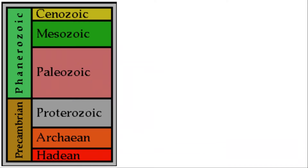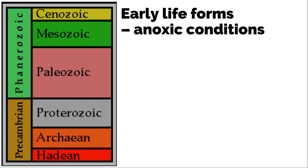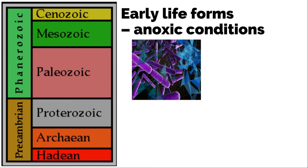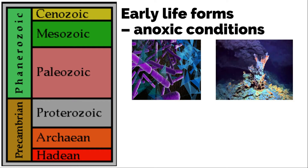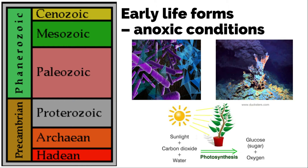Now let's talk about the geologic time scale. Early life forms most likely adapted to anoxic conditions, meaning free of oxygen. Anoxic describes an environment without oxygen — mostly microbes live here, and oxygen is actually toxic to most of them. Hydrothermal vents are an example of an anoxic environment. That is why the emergence of photosynthesis is important with regards to the evolution of the Earth's atmosphere — this is one example of the interaction of the systems.